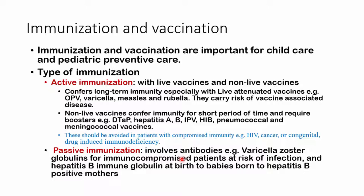With active immunization, there are two types. We could inject them with live attenuated vaccines. These obviously confer a long-term type of immunity. So we have vaccines such as oral polio vaccine, a varicella vaccine, measles, rubella, as well as previously we used to give mumps. These are going to carry the risk of vaccine-associated disease.